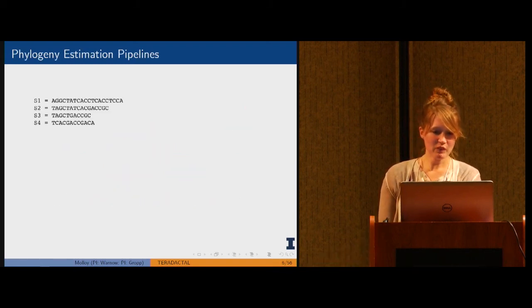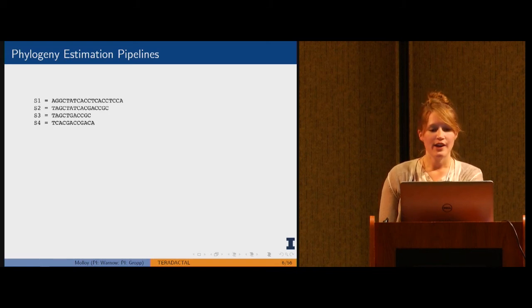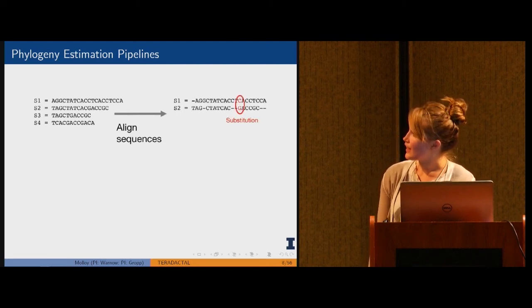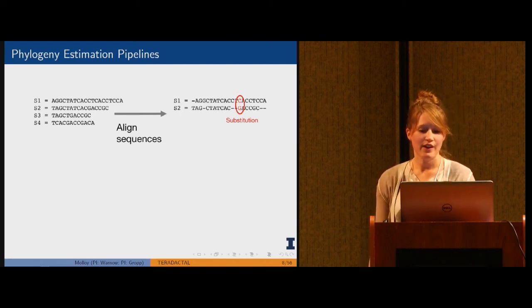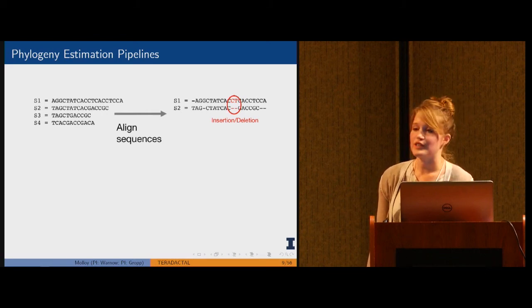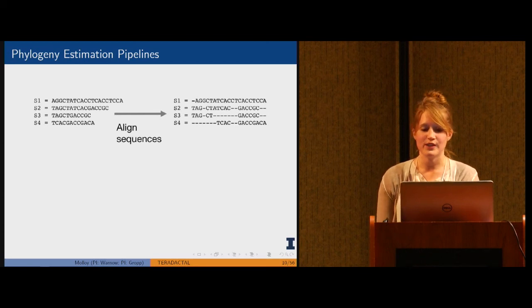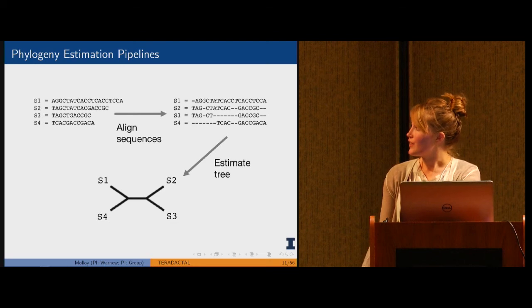Phylogeny estimation is a whole pipeline process. It begins with sequences of unequal lengths, and then we want to begin by aligning them. This first step shows a pairwise alignment and indicates certain events like substitutions or insertion deletion events. Ultimately, a lot of pipelines want something called a multiple sequence alignment where all sequences are aligned together, creating this data matrix from which we will estimate a tree.